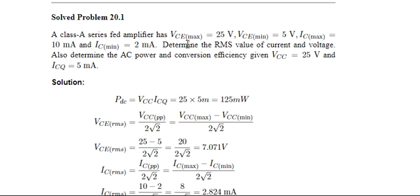So this difference divided by 2 root 2 is 25 minus 5 divided by 2 root 2, which equals 7.071 volts. So VC Q will be 7.071 volts.